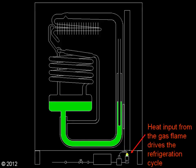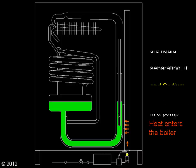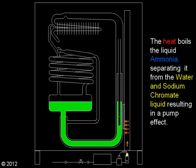Heat input from the gas flame drives the refrigeration cycle. Heat enters the boiler. The heat boils the liquid ammonia, separating it from the water and sodium chromate liquid, resulting in a pump effect.